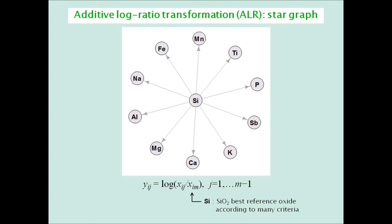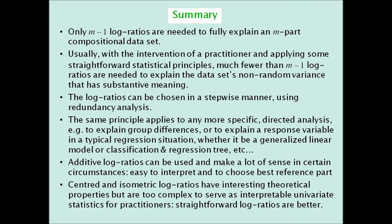In summary, only m-1 log ratios are needed to fully explain an m-part compositional dataset. Usually with the intervention of a practitioner and applying some straightforward statistical principles, much fewer than m-1 log ratios are needed to explain the dataset's non-random variance that has substantive meaning.